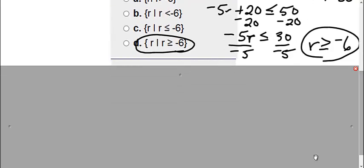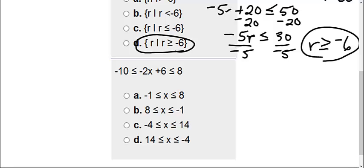Now my last, now you try, we actually have two different problems here. We have negative 10 is less than or equal to negative 2x plus 6 and is less than or equal to 8. So we're going to separate it into two equations. We have negative 10 is less than or equal to negative 2x plus 6, and then we also have negative 2x plus 6 is less than or equal to 8.